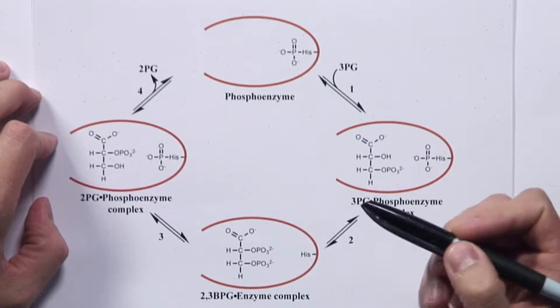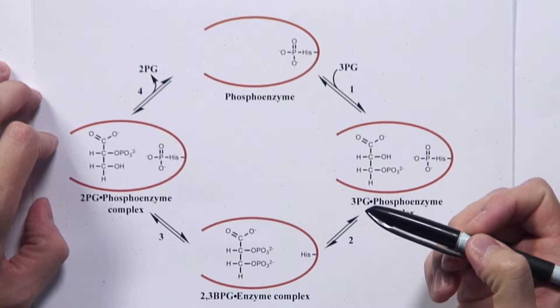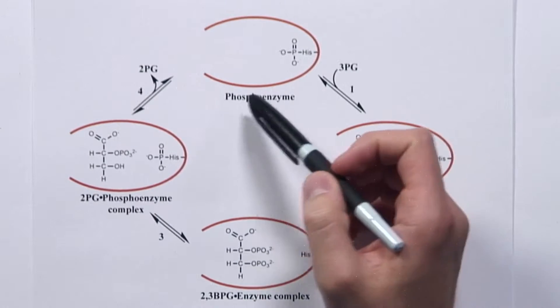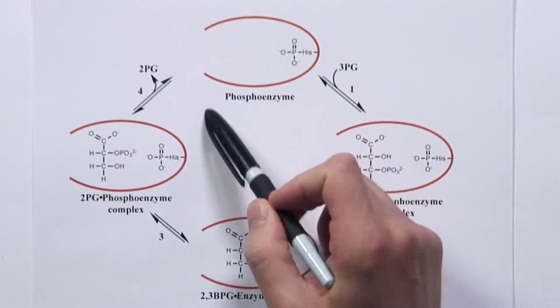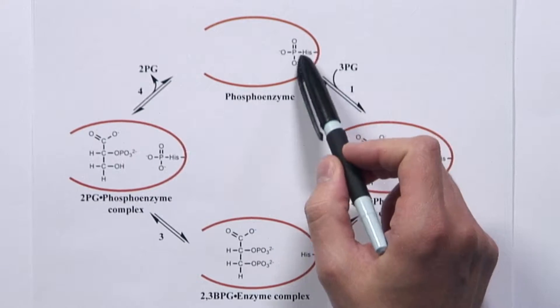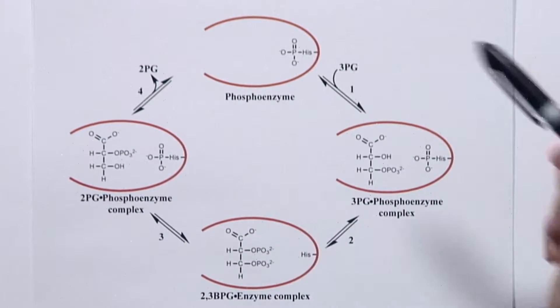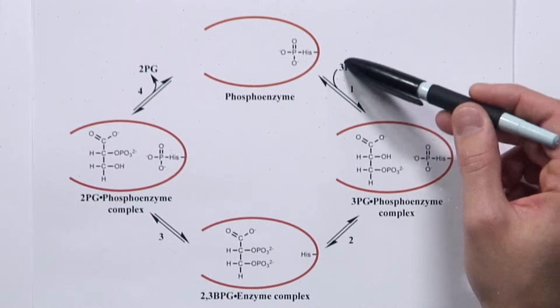Phosphoglycerate mutase is a fascinating enzyme because it uses a phosphorylated histidine in the active site. This is actually an example of a phosphorus-nitrogen bond, one of the very few available in biochemistry. Here is a schematic of the mechanism of phosphoglycerate mutase. The reaction starts where the enzyme is already phosphorylated — we'll call it a phosphoenzyme — and the histidine in the active site contains the phosphate group. Then the enzyme binds the substrate 3-phosphoglycerate.